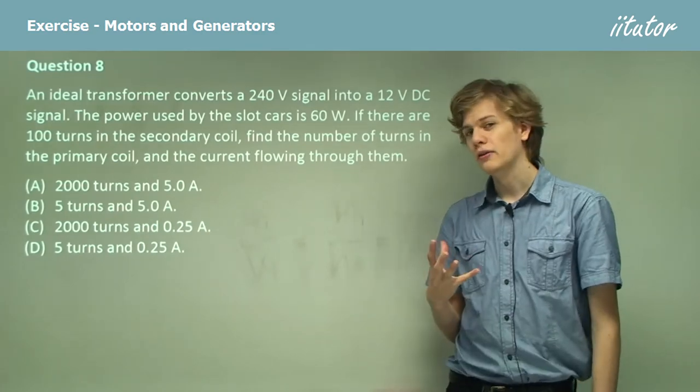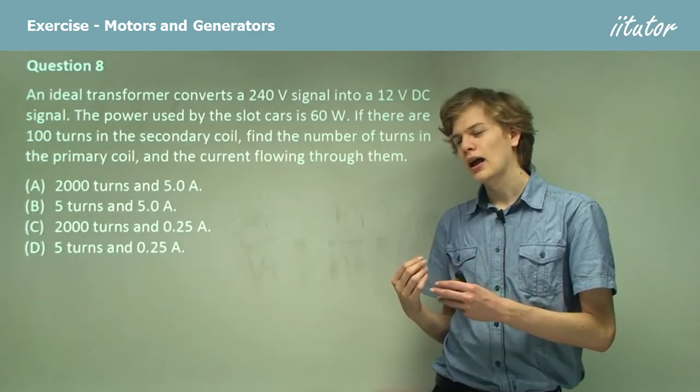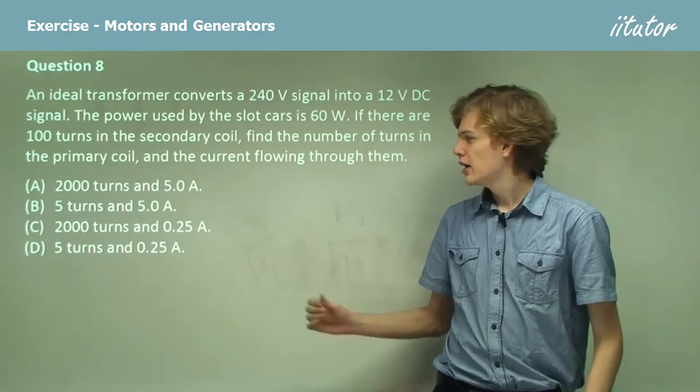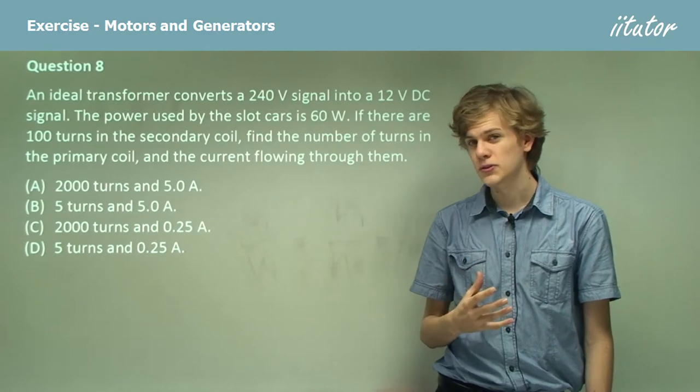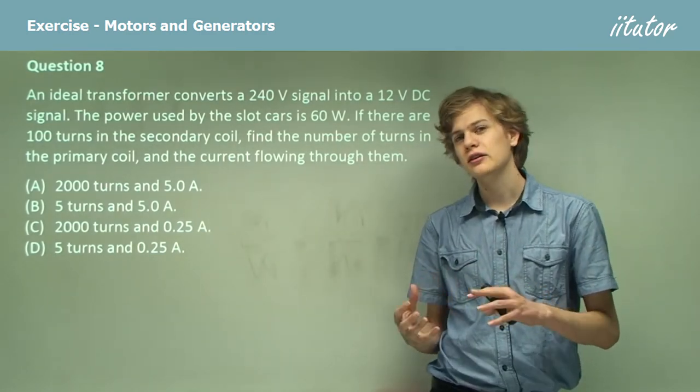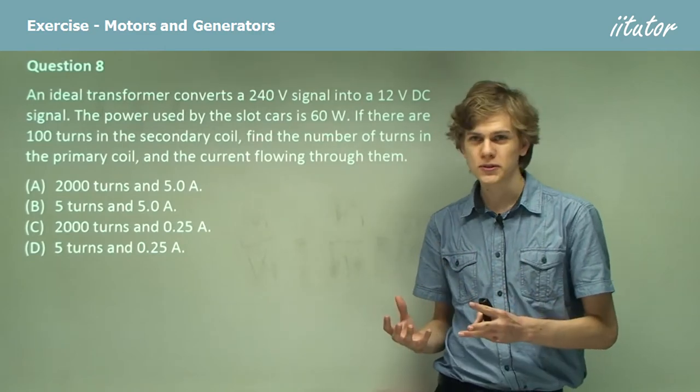So what we need to figure out is how the number of turns in the primary coils differs and how the current in the primary coils differs. Now I know the number of turns is going to be the same as the ratio of the voltages.